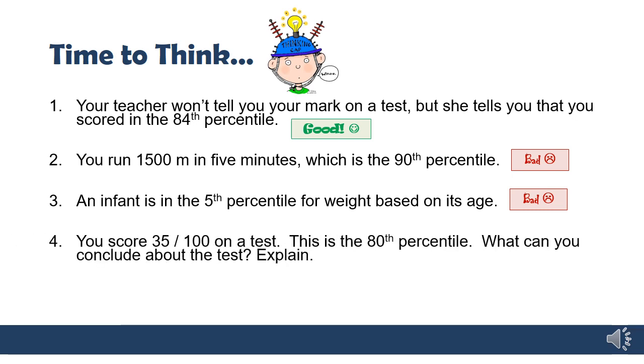You score 35 out of 100 on a test. This is the 80th percentile. What can we conclude about the test? If you're in the 80th percentile, it means 80% of people scored lower than you did. But 35 out of 100 is not very good. So if 80% of people are getting a score lower than 35, then it was probably a really hard test.